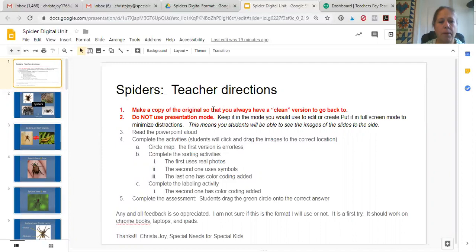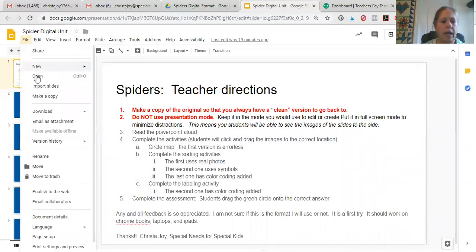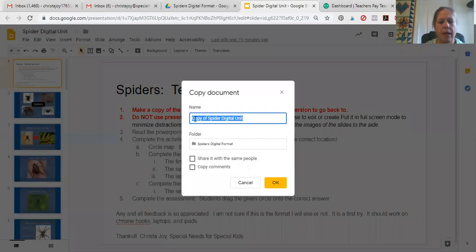So to make a copy of the original, you're just going to go up here to the file button and just click make a copy, and then you can name it whatever you want so you will know to come back to it later. I'll just call this Krista's copy.